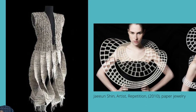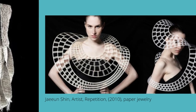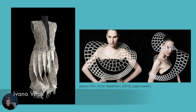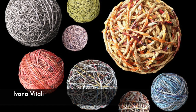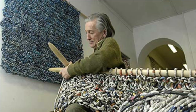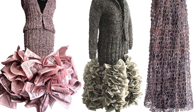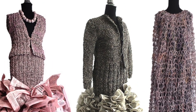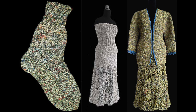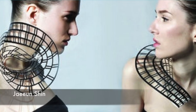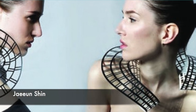Shown here are two examples of artists that use paper in their work very differently. On the left is Italian sculptor, ecologist, and performance artist Ivano Vitale, who creates color-coded balls of yarn from the daily newspapers he reads, then uses handmade knitting needles to weave extraordinary full-sized creations worn on the body. On the right is Jae-in Shin, who creates structural pieces of body ornamentation that mimic wire in shape and form but are constructed out of paper.